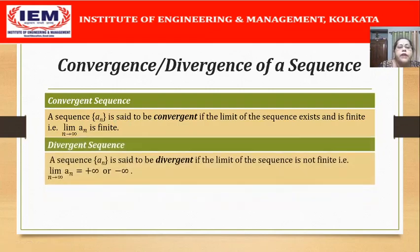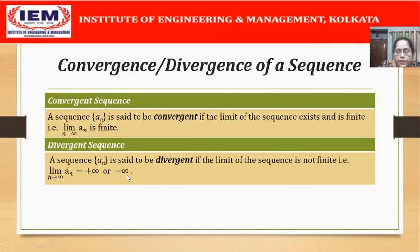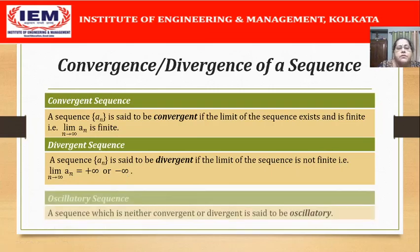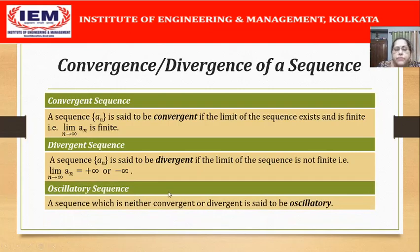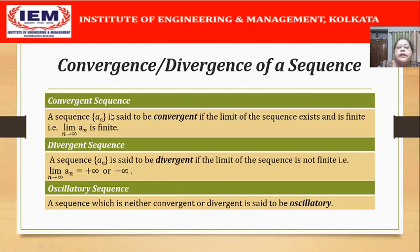Next comes the concept of divergent sequence. A sequence {a_n} is said to be divergent if the limit of the sequence is not finite — that means lim a_n is either +infinity or -infinity. There is also a third classification called an oscillatory sequence. It is a sequence which is neither convergent nor divergent — that is, if there is no finite limit as well as no infinite limit, then the sequence is said to be oscillatory.